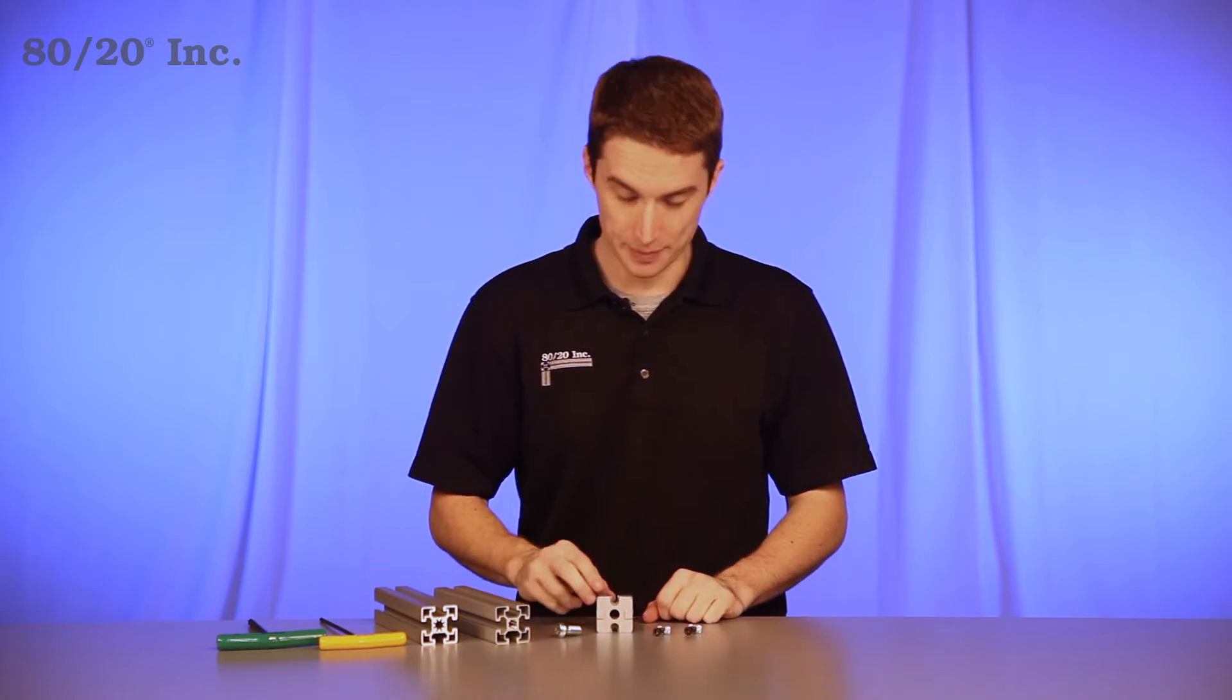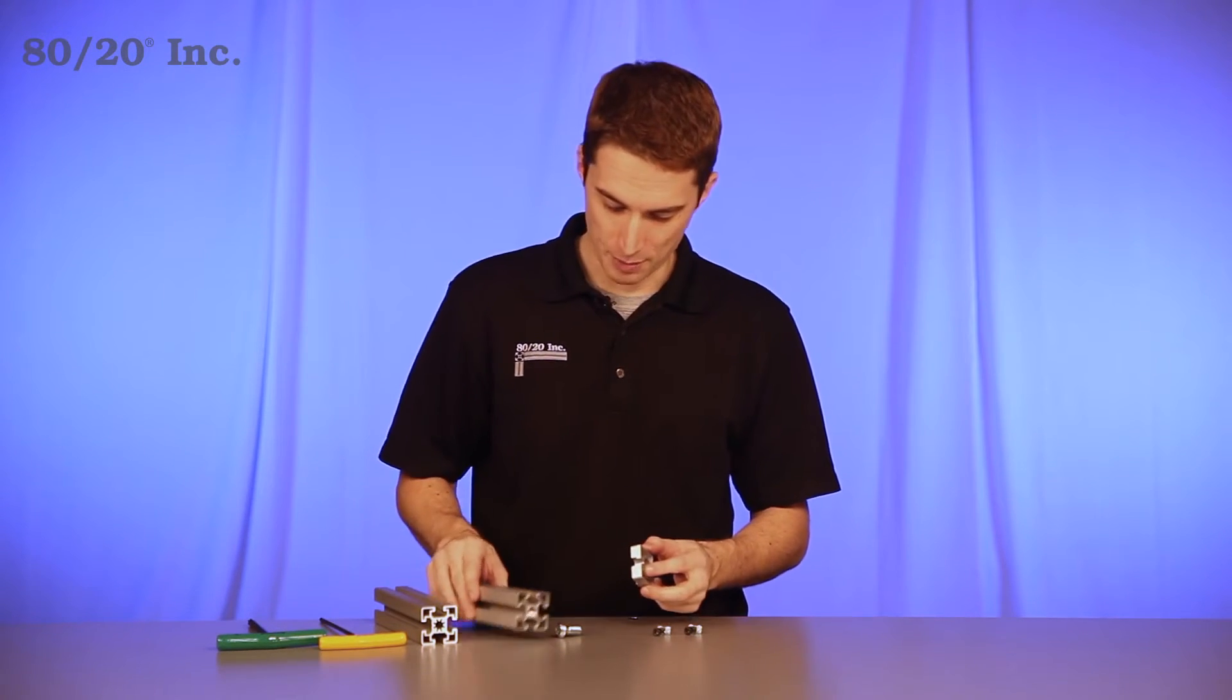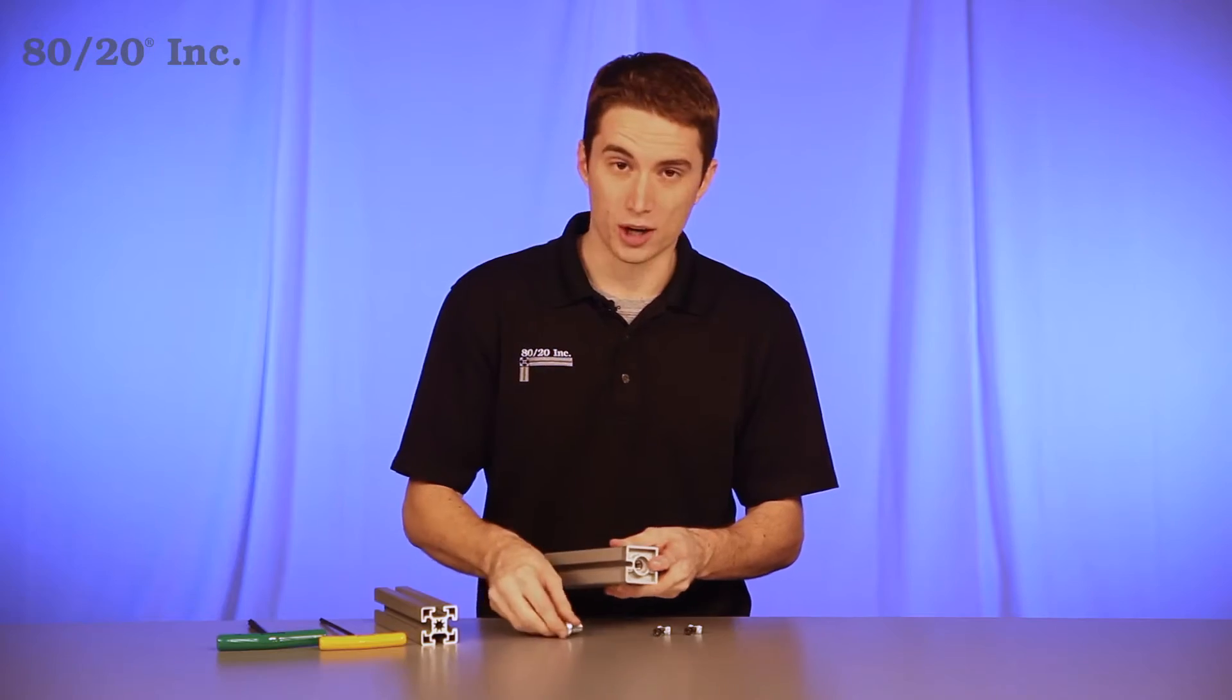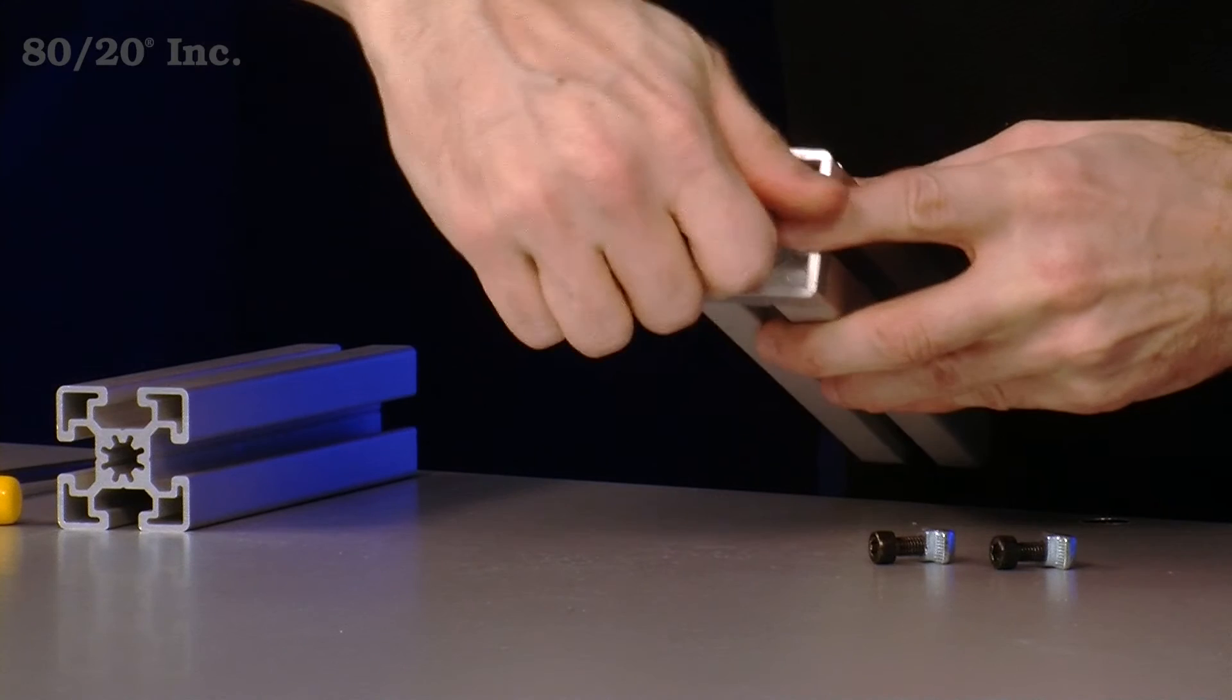Now when it comes to installing the plate connector, you're going to take your plate and place it over your end tap bar. From there we'll take our lobe screw and put it into the end tap.